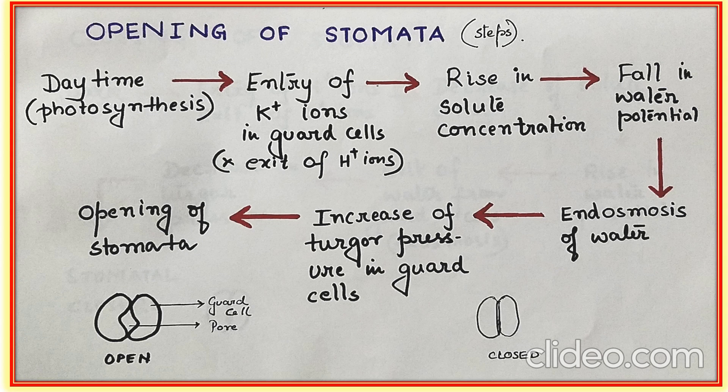Now we'll talk about the opening of stomata during daytime. What happens? Photosynthesis takes place. As we all know, during photosynthesis there is a huge influx of potassium ions and a simultaneous exit of hydrogen ions. This leads to a rise in solute potential and a great fall in water potential.